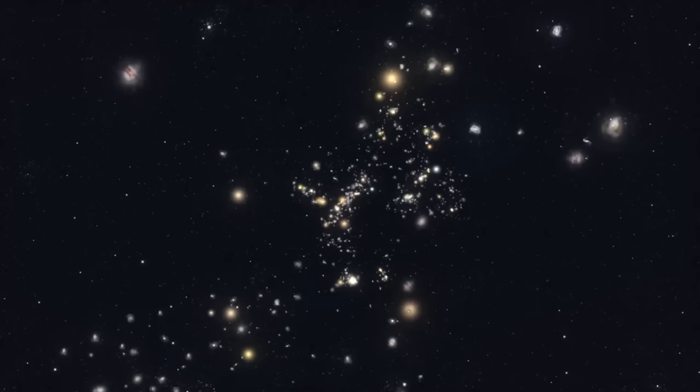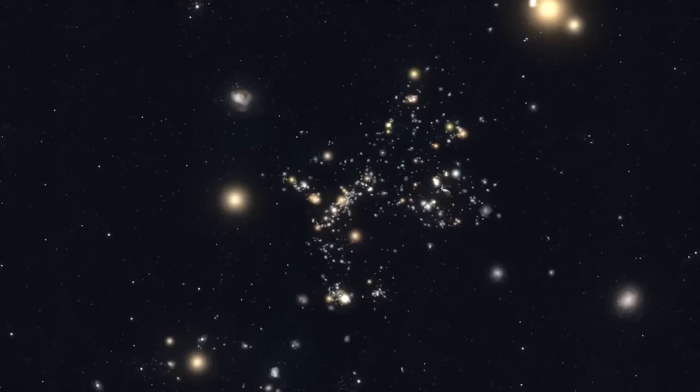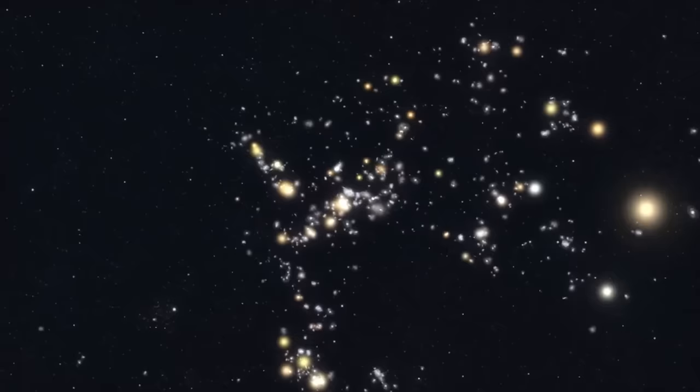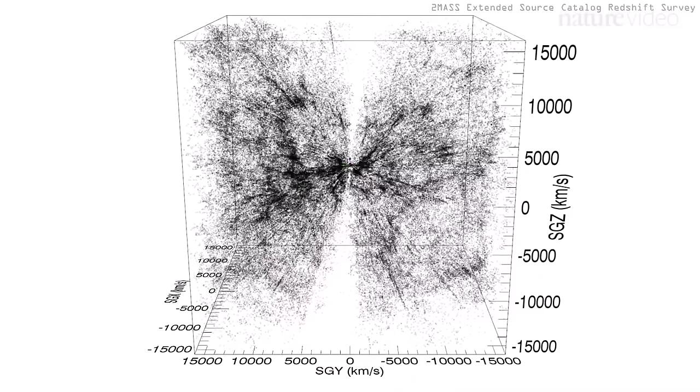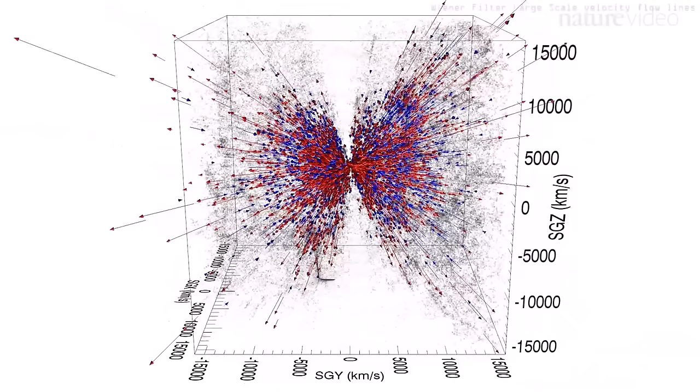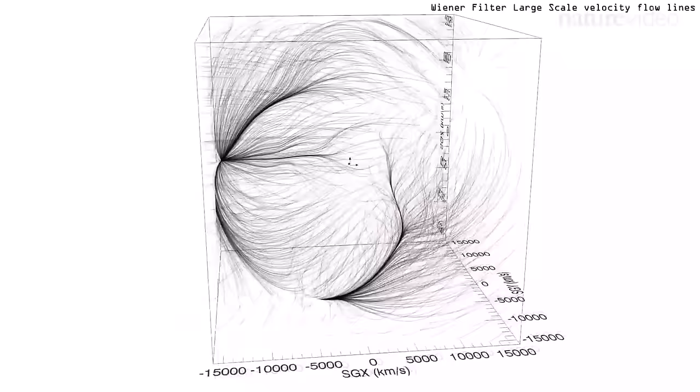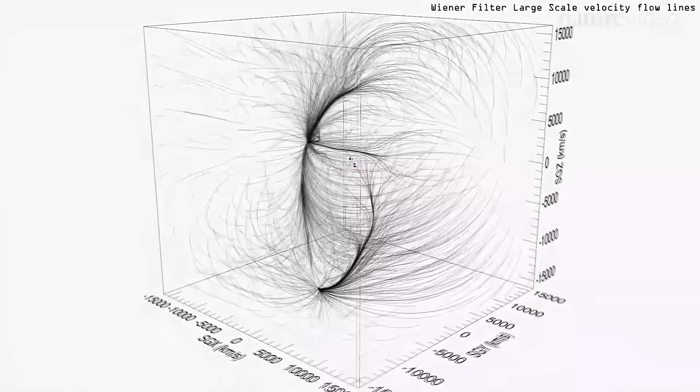While Voyager 1 sailed toward the edge of our solar system, astronomers on Earth delved into the cosmic architecture that extends far beyond the reach of our most powerful telescopes. One of the awe-inspiring structures revealed by astronomers is the Great Wall - a colossal cosmic structure stretching across hundreds of millions of light years. This vast assemblage of galaxies, interconnected by the gravitational forces that govern the universe, stands as a testament to the colossal scale of cosmic structures. The Great Wall is part of a larger conglomeration known as the Sloan Great Wall, discovered in the late 1980s by astronomers utilizing data from the Sloan Digital Sky Survey. This immense structure is just one thread in the larger cosmic web - a sprawling network of filaments and voids that span the observable universe.